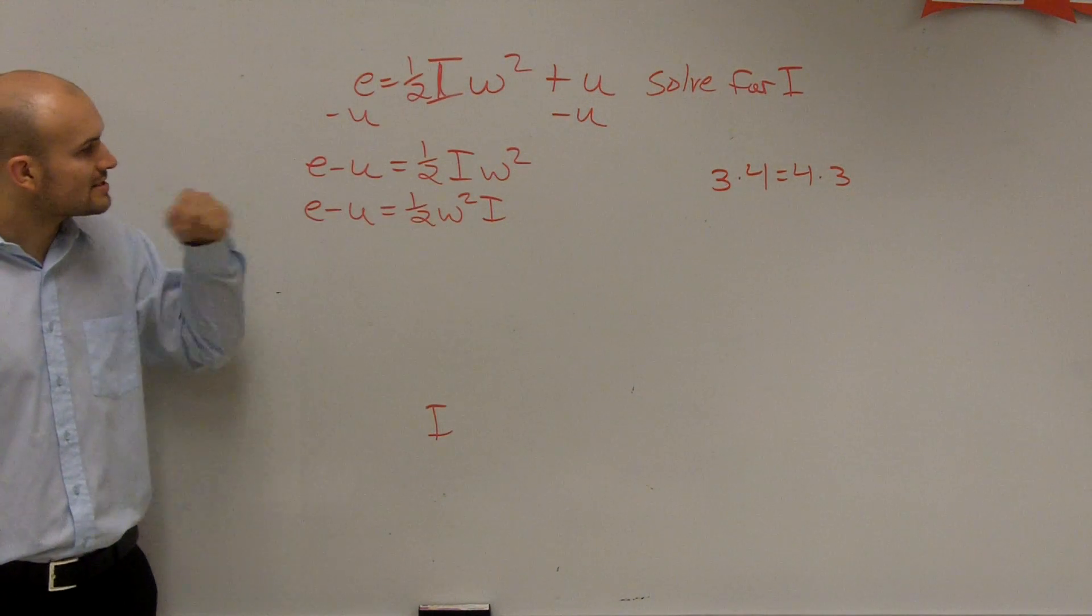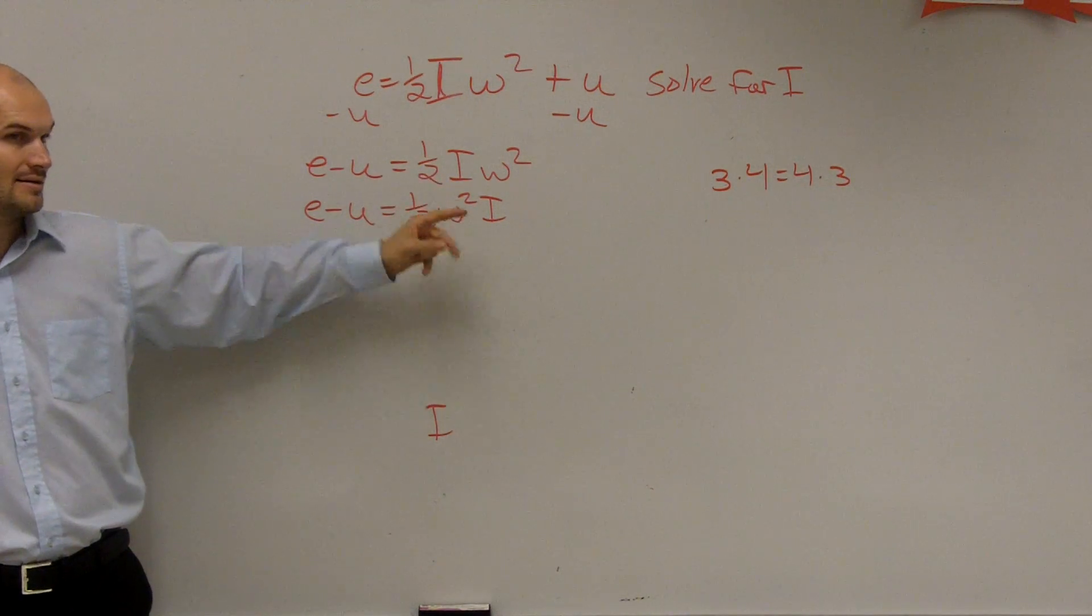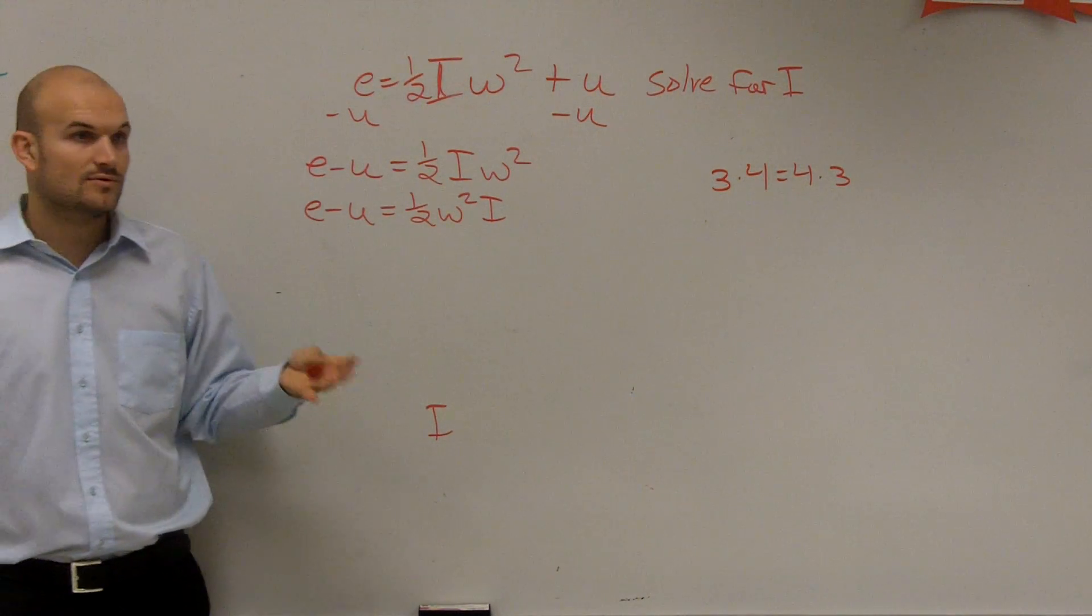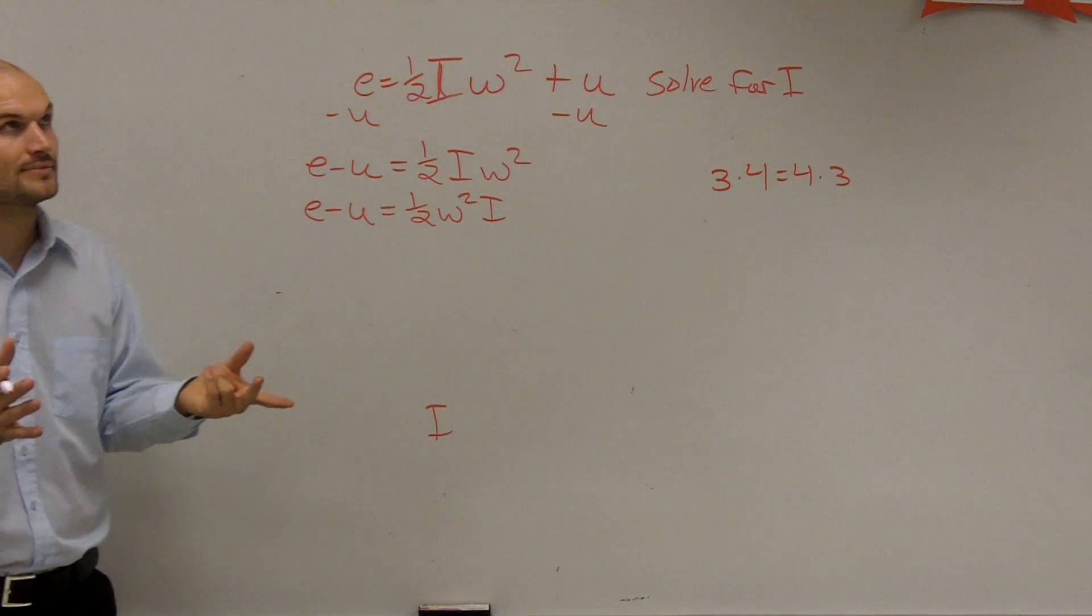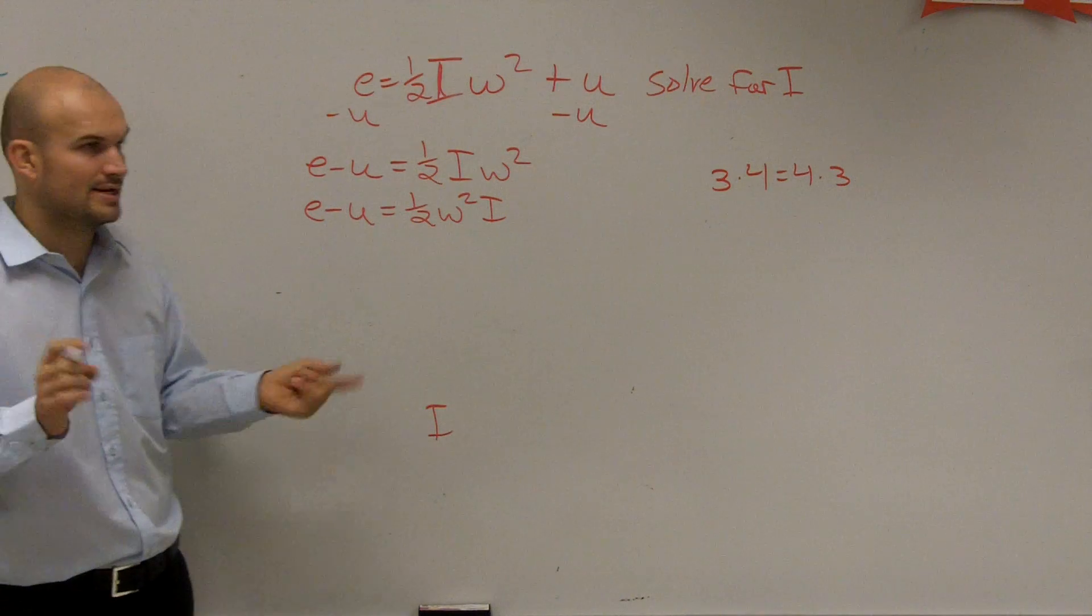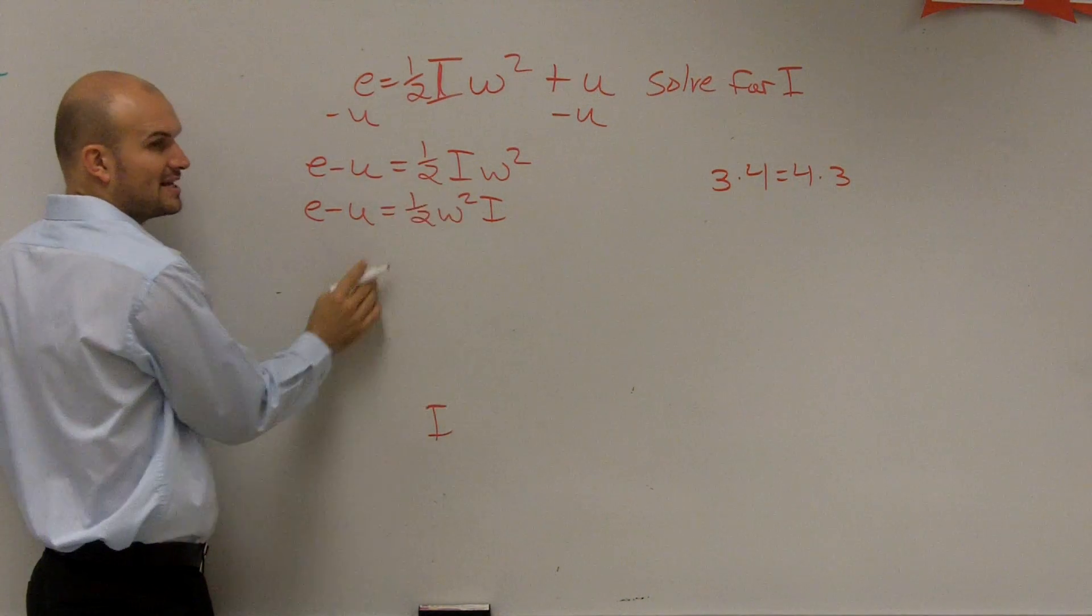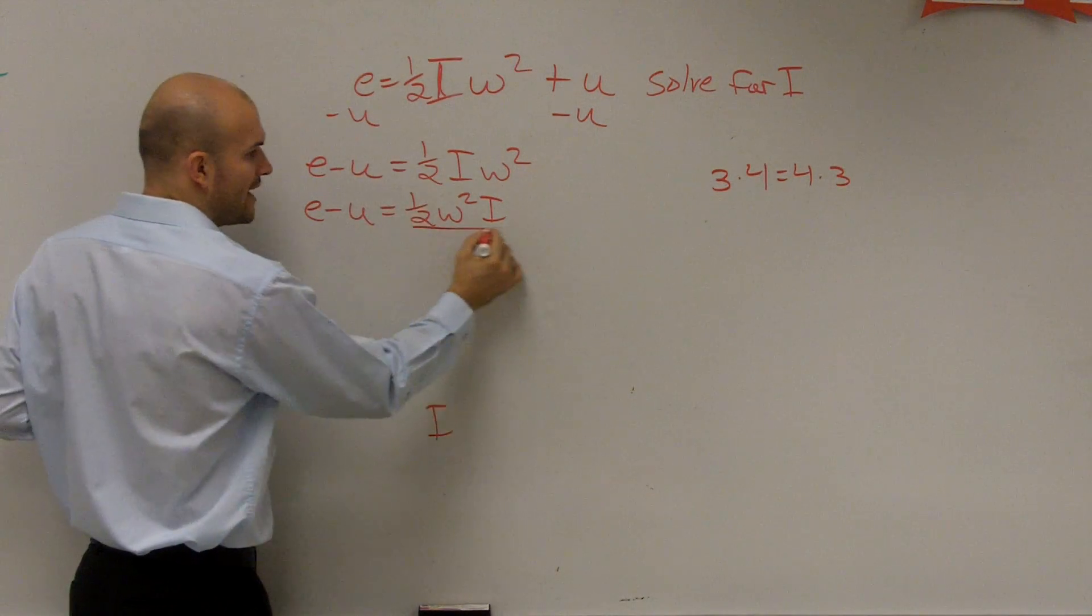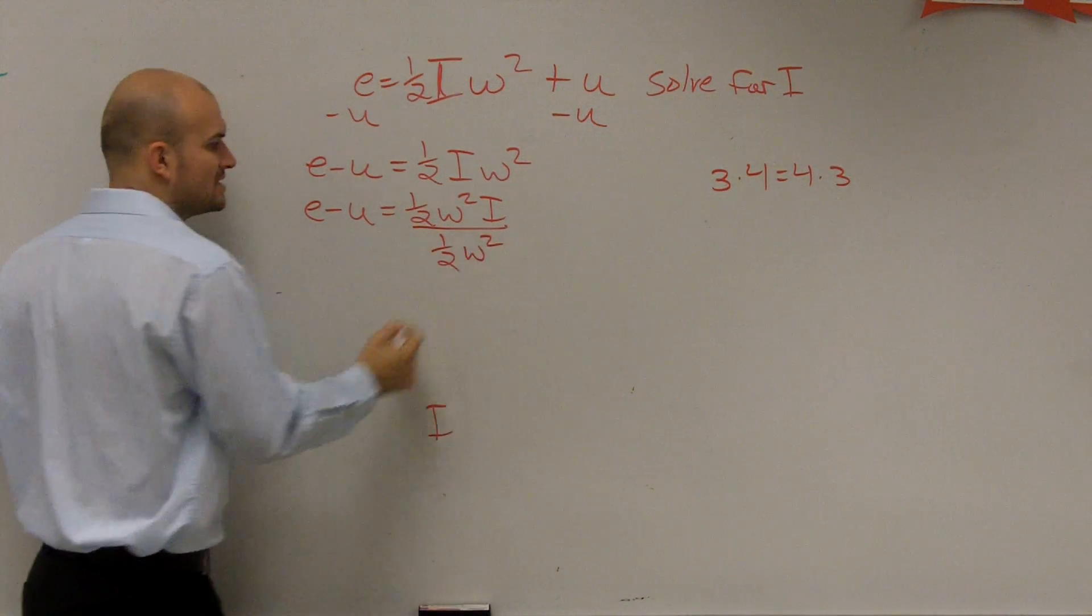So now I look at this, and I need to see what's happening to my i. Now we could do this at the same time, but I'll do it two different ways. First way, I'm going to do them at the same time. What's happening? I'm multiplying by w squared and multiplying by one half. So you divide by one half and you divide by w squared.